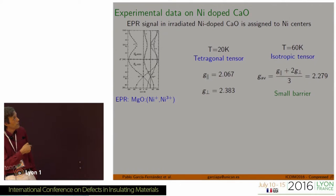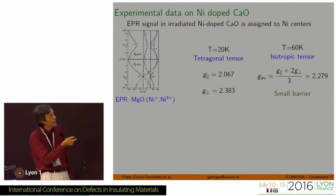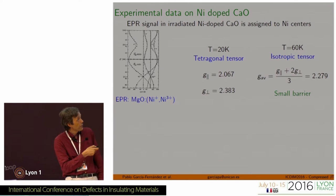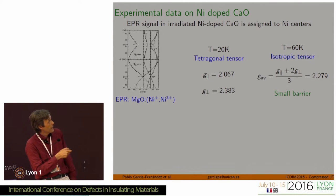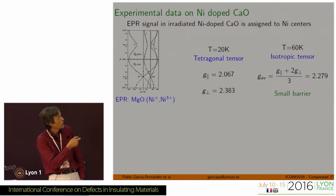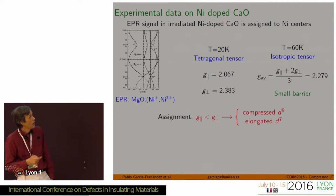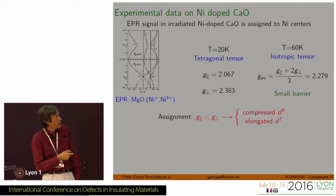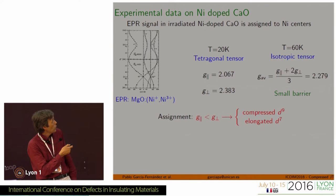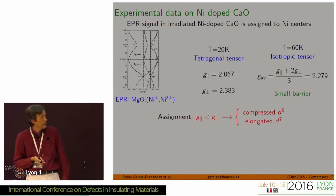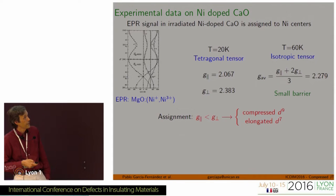When you raise the temperature a little bit, the EPR signal goes into an isotropic tensor with an average G-factor. The barrier is very small, so just raising the temperature a little bit activates the thermally activated processes. When you look at the assignment, G-parallel is smaller than G-perpendicular, so the two possibilities are a compressed D9 center or an elongated D7.